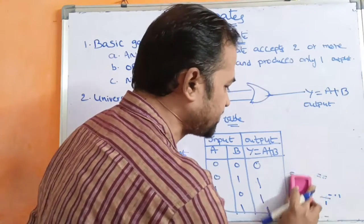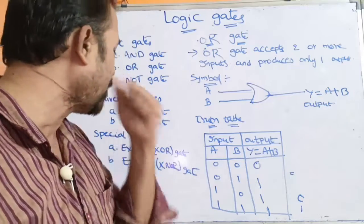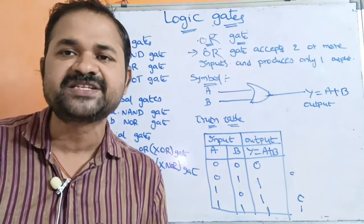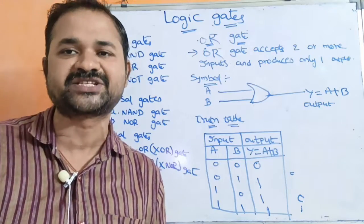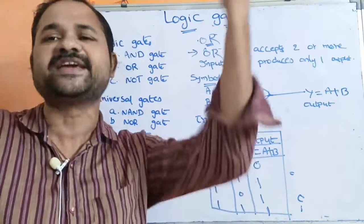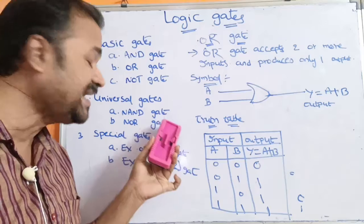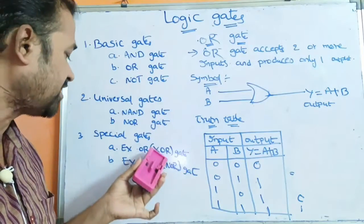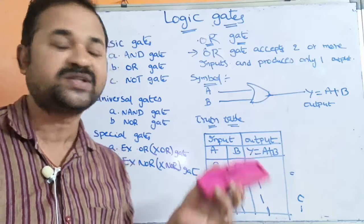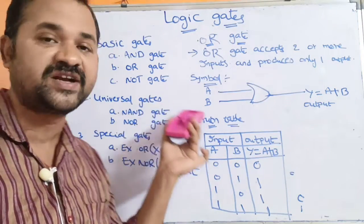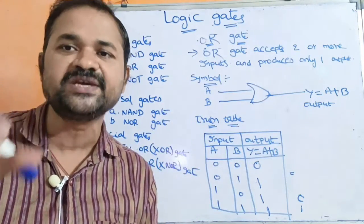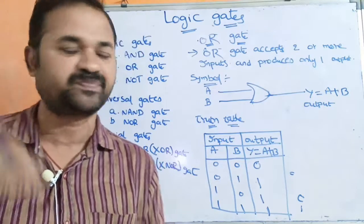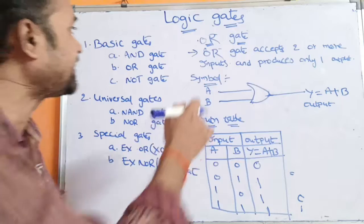Now let us see the universal gates. So why are NAND and NOR gates called as universal gates? Universal gates means by using universal gates we can implement any other gate. So by using NAND gate and NOR gate, we can implement AND gate, OR gate, NOT gate, XOR gate, and XNOR gate. That is why these gates are called as universal gates.